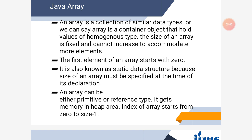Array is a container object that holds values of homogeneous type. The size of an array is fixed and cannot be increased to accommodate more elements once its size has been declared — you cannot modify that. Its index starts with 0. If we mention an array of size 10, then it starts with a[0] up to a[9], and 10 values can be stored. But it is very difficult to add or delete a value in the middle of an array, and index goes from 0 to size minus 1.